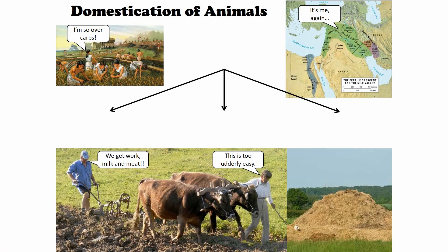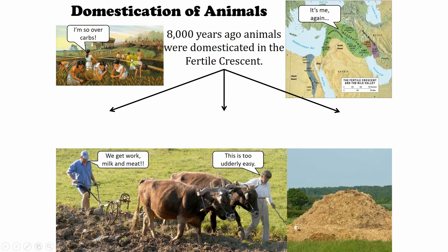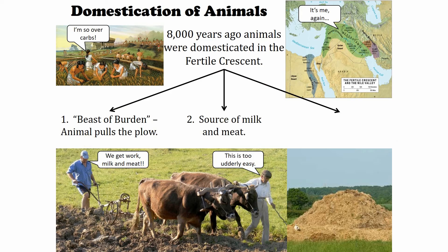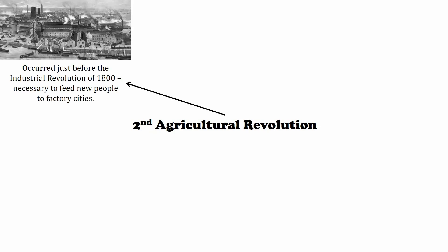The second part is domestication of animals. They realized maybe we could do the same thing with animals — select positive animal traits for larger, docile animals. Animals also provide a lot of hidden value: they can pull a plow, carry things, provide milk, and produce manure you can compost to create fertilizer. This animal domestication is another big game-changer.